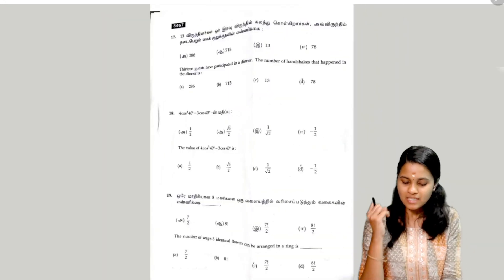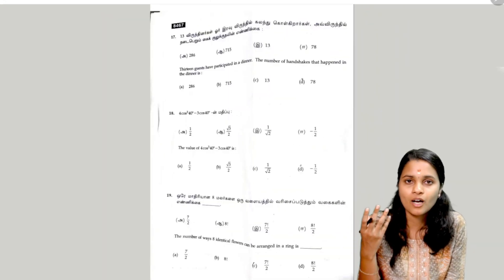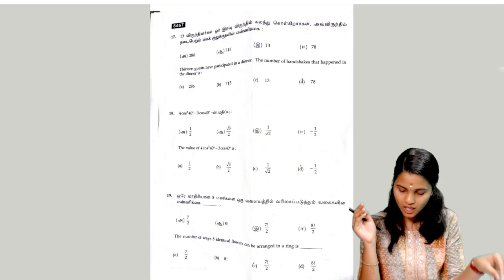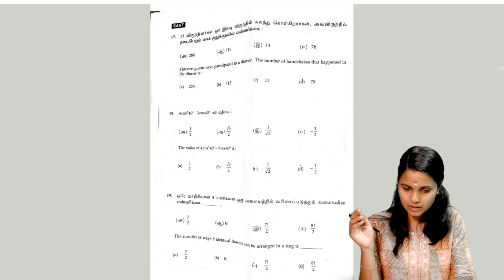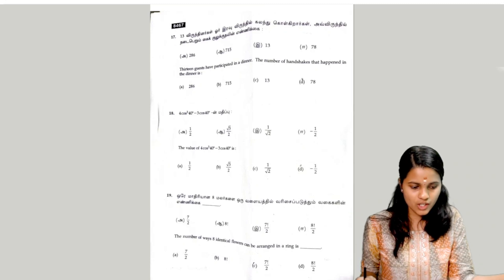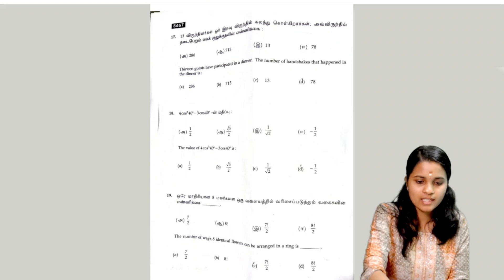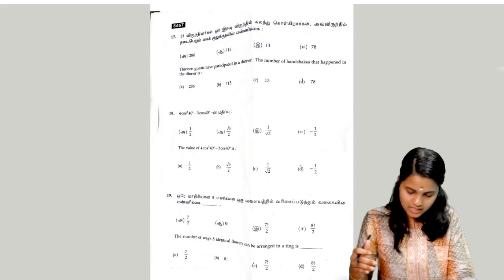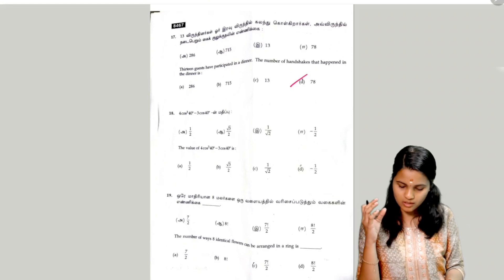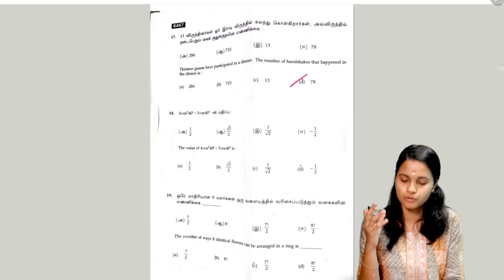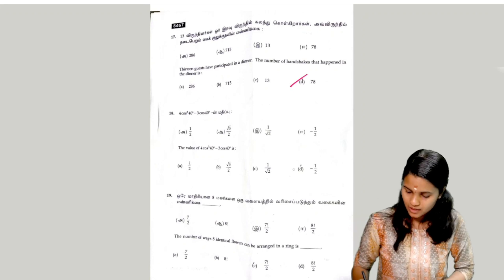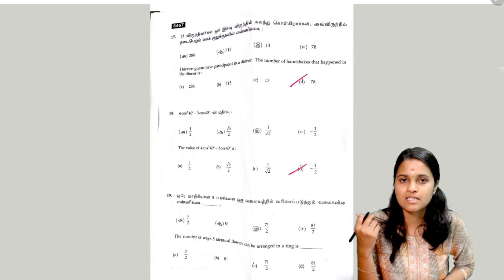The next question is question 17: 13 guests have participated in a dinner. This is a book back question and the answer is 78. The next question: 4 cos³(40°) − 3 cos(40°) — the answer is −1/2.